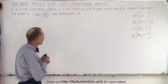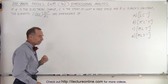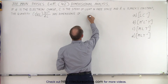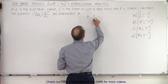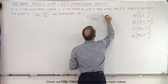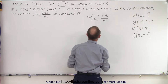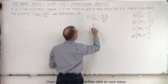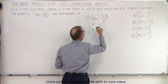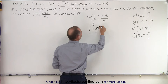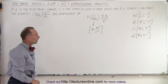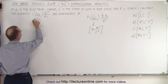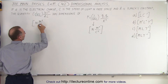How do we go about doing that? First of all, they didn't tell us anything about 1 over 4π epsilon sub-naught, but we should realize that if we look at Coulomb's law, the force between two charges equals 1 over 4π epsilon sub-naught times Q1 Q2 divided by the distance between them squared. So we need newtons on that side, meaning this quantity has units of newtons times meters squared divided by Coulombs squared.